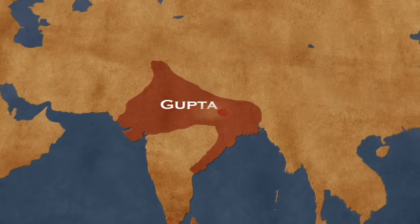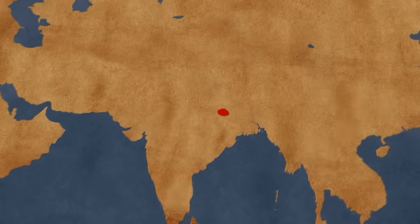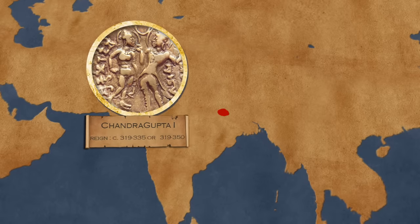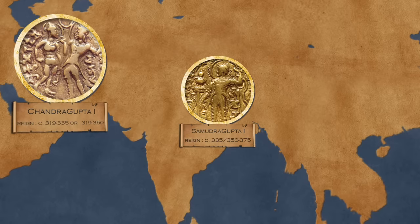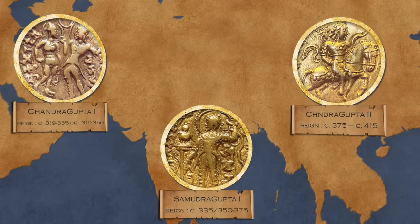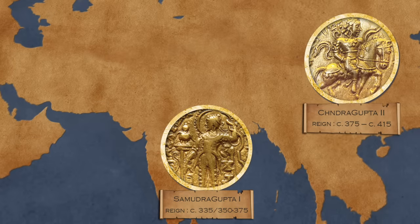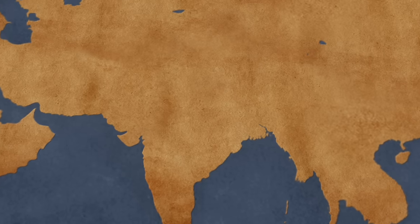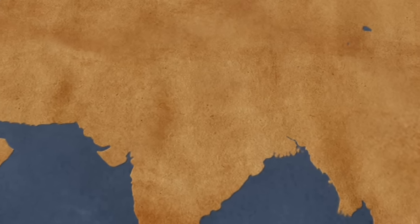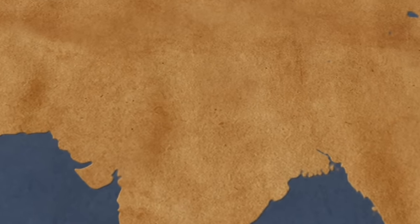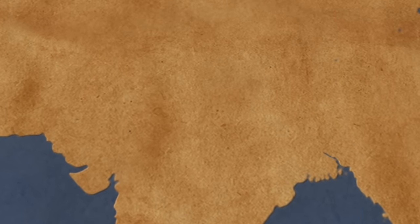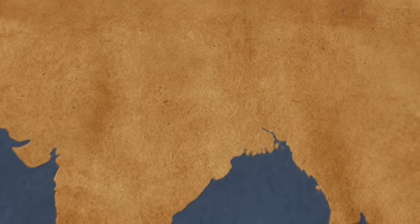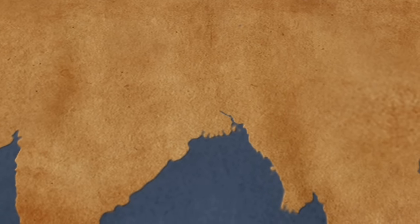The ruling dynasty of the empire was founded by King Sri Gupta. The most notable rulers of the dynasty were Chandragupta I, Samudragupta, and Chandragupta II, alias Vikramaditya. Their origin is debatable. According to several theories, they originated in present-day Uttar Pradesh, a region where many historical proofs from that time have been discovered, but other sources speak about the Bengal region as the homeland of the early Guptas.